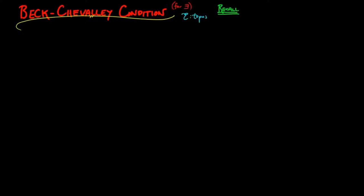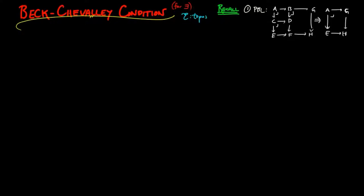Recall that: one, the pullback lemma implies that if the following diagram consists of pullback squares, then the outer square is a pullback square as well; and two, the set of subobjects of X is naturally isomorphic to morphisms from X to the subobject classifier Omega.